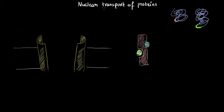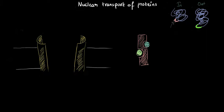Let's say one protein moves inside the nucleus and another one moves out of the nucleus. The protein that moves inside the nucleus would have a certain stretch of peptide that allows it to be recognized by a receptor, which helps it move inside the nucleus. This signal, or stretch of peptide, is called the nuclear localization signal, or NLS.